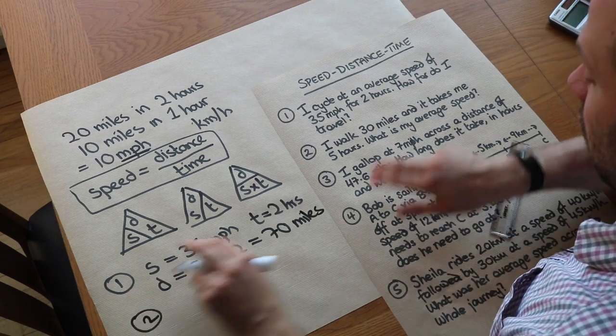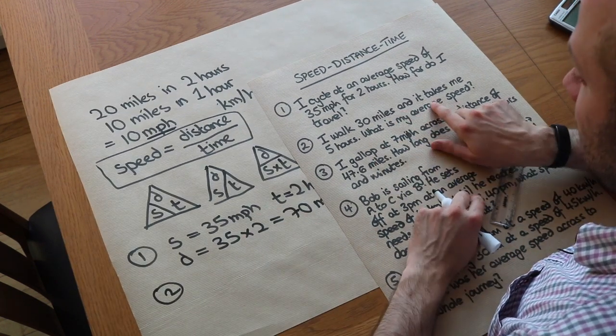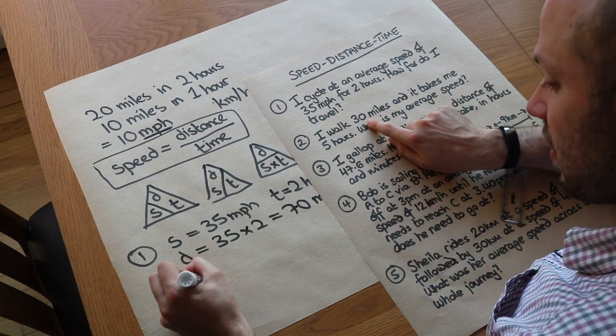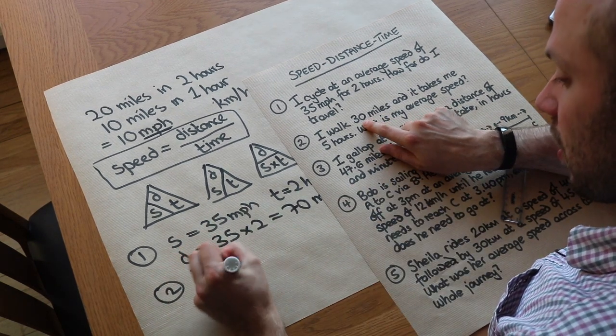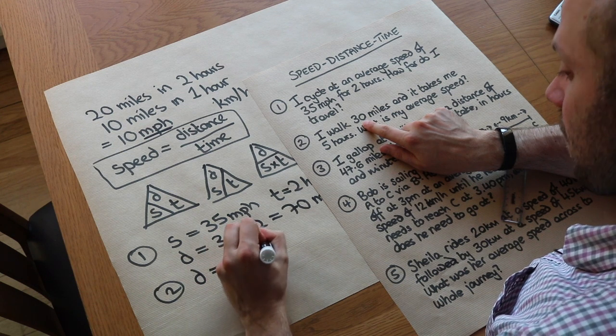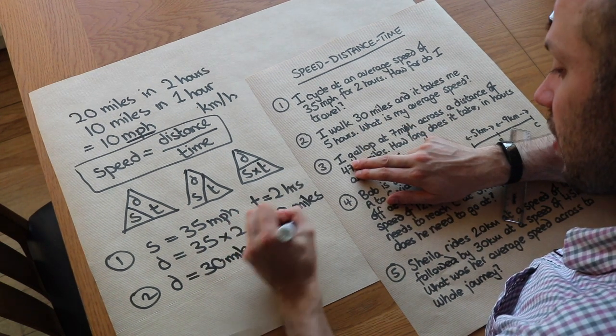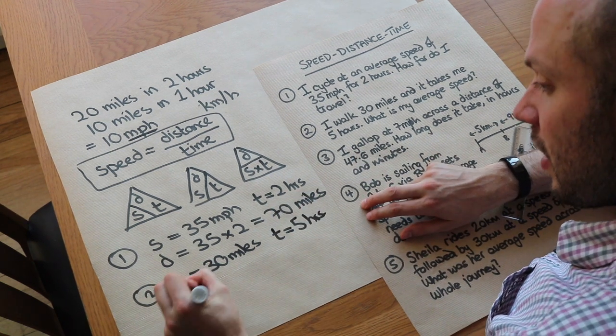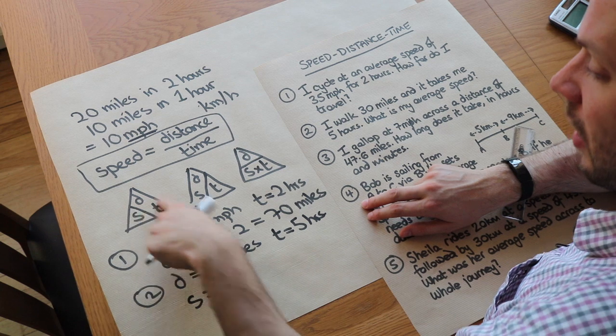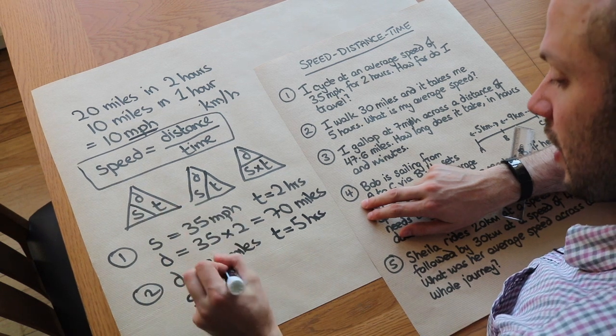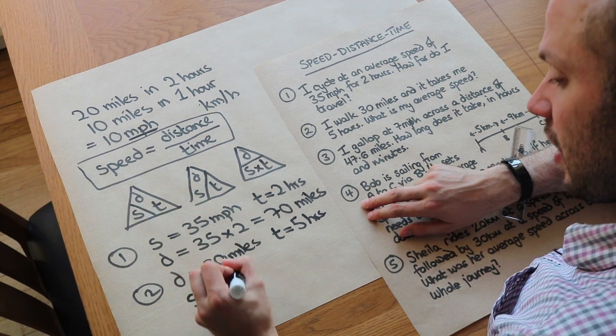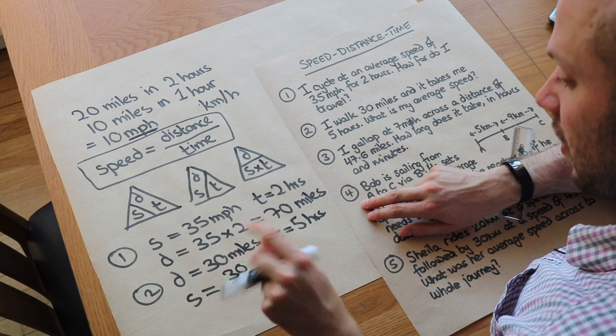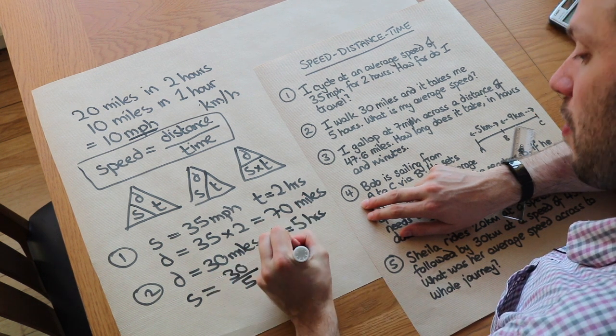What about question 2? I walk 30 miles and it takes me 5 hours. What's my average speed? Well, this time I've got the distance which is 30 miles. I've got the time which is 5 hours. And this time I'm going to find the speed. So speed using this triangle is D over T. So it's distance 30 divided by time 5, and that is 6. Let's look at the unit. We've got miles, hours, so it's miles per hour.